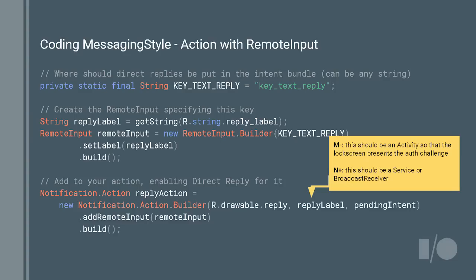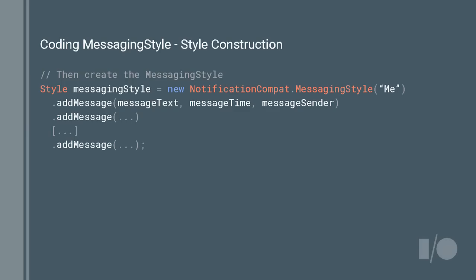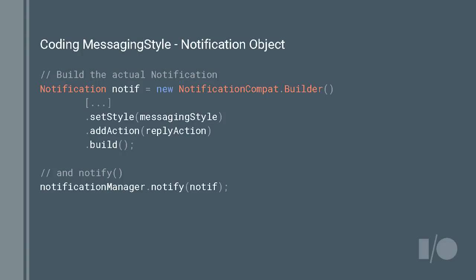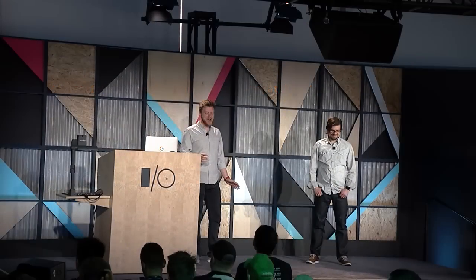To actually use messaging style end to end, you need to create a reply action with a remote input. Then create a new instance of MessagingStyle with the reply name that shows up when the user replies in place, and add all previous messages from the conversation by calling addMessage with the text, time, and sender. Finally, build the notification as normal, set the style to messaging style, add the reply action, and call notify. That's really all there is to it — and it's a little bit easier than just adding two pictures to a notification.